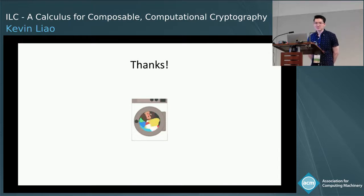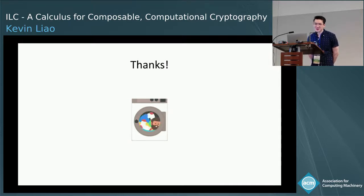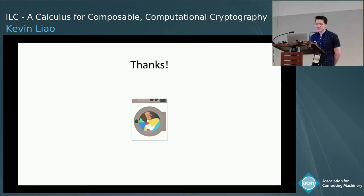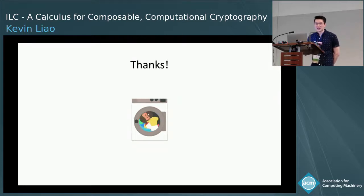Follow-up question: how do you handle failure in the protocol — a read or write may fail or may be intercepted? In UC, the security definition has a quantified adversary which controls how messages are delayed, how messages don't get to where they should, or how processes are corrupted. These are all encapsulated by this explicit adversary process.